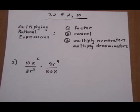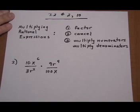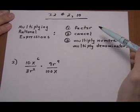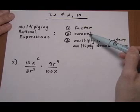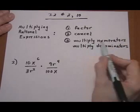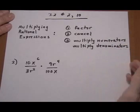7.2 numbers 2 and 10. Both of these problems have to do with multiplying rational expressions and there's three steps to use every time. First factor, then cancel common factors, and after that you multiply across for the numerators and multiply across for the denominators.